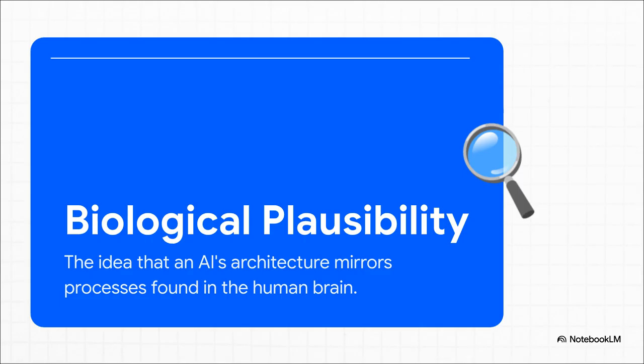Alright, on to claim number two, and this one is a doozy. It's all about biological plausibility. The idea here is that BDH isn't just supposed to be smart. It's supposed to be smart in a human-like way, with an internal architecture that actually mirrors the neural networks inside our own heads.